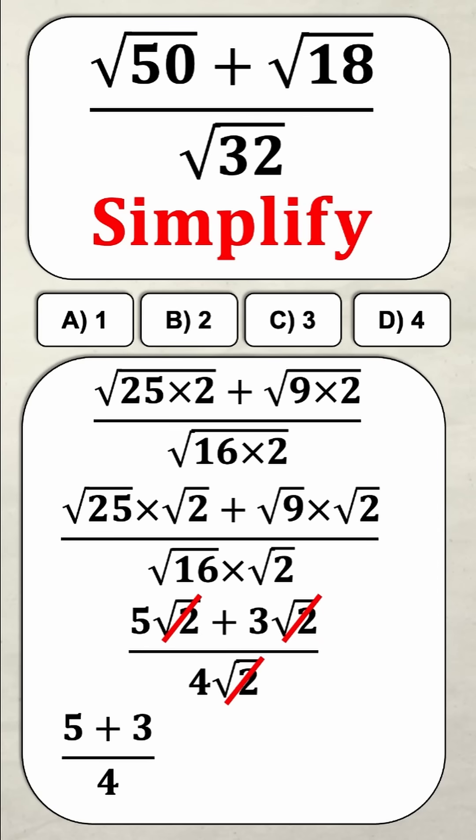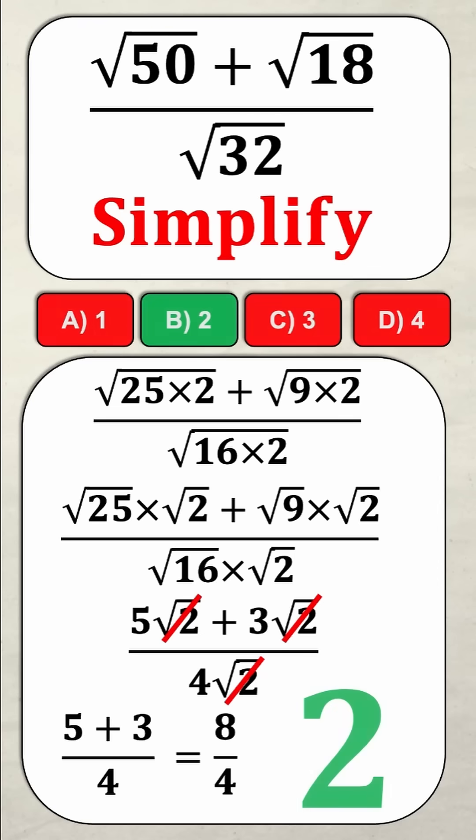5 plus 3 divided by 4. Well obviously 5 plus 3 is 8 and 8 divided by 4 is very obviously 2.